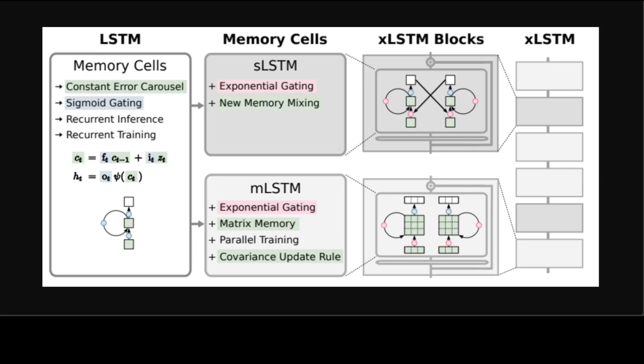The introduction of heads for sLSTM together with exponential gating establishes a new way of memory mixing. For mLSTM, multiple heads and multiple cells are equivalent. Looking at the diagram of the extended LSTM family from left to right: first is the original LSTM with constant error carousel and gating; second, new sLSTM and mLSTM cells introduce exponential gating; third, sLSTM and mLSTM in residual blocks yield XLSTM blocks; and fourth, stacked XLSTM blocks give the full XLSTM architecture.